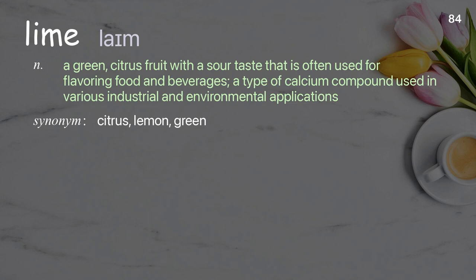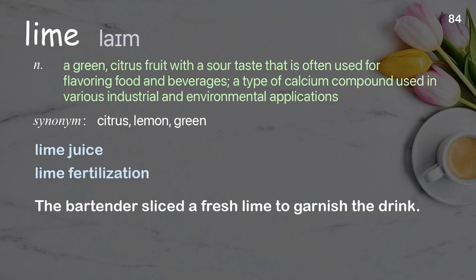Lime. A green, citrus fruit with a sour taste that is often used for flavoring food and beverages. A type of calcium compound used in various industrial and environmental applications. Examples: lime juice, lime fertilization. The bartender sliced a fresh lime to garnish the drink.